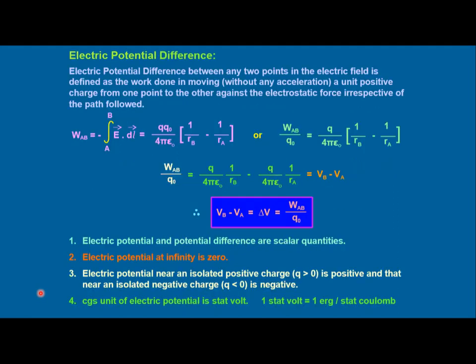For electric potential difference: if you bring a charge from infinity to point B, and similarly from infinity to point A, the difference between the electric potential at point B and point A is called electric potential difference, which is V_B minus V_A = delta V = W_AB / q_0. Electric potential and potential difference are scalar quantities. Electric potential at infinity is zero. Electric potential near an isolated positive charge is greater than zero, and near a negative charge is less than zero. The CGS unit of electric potential is the statvolt, where one statvolt equals one erg per statcoulomb.